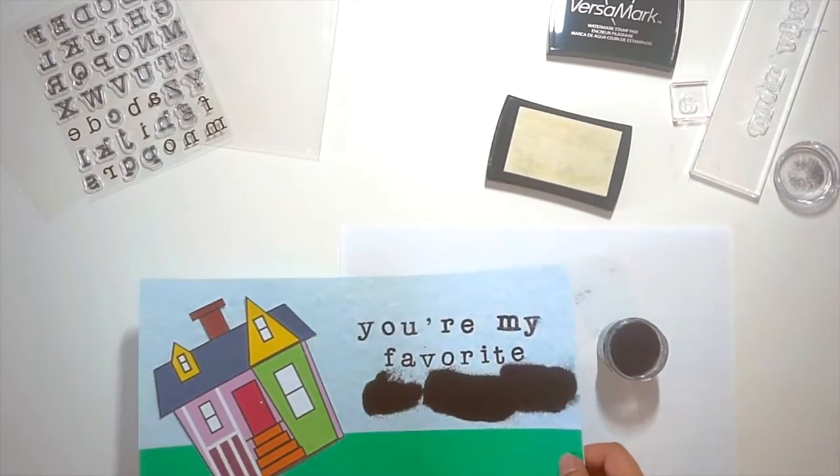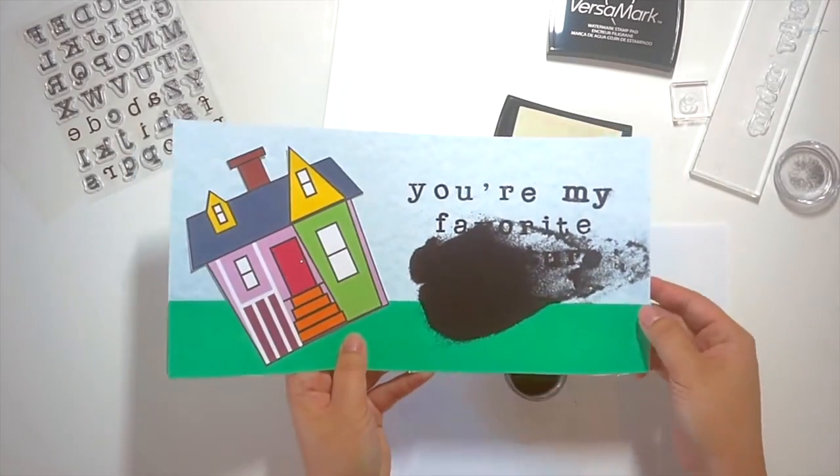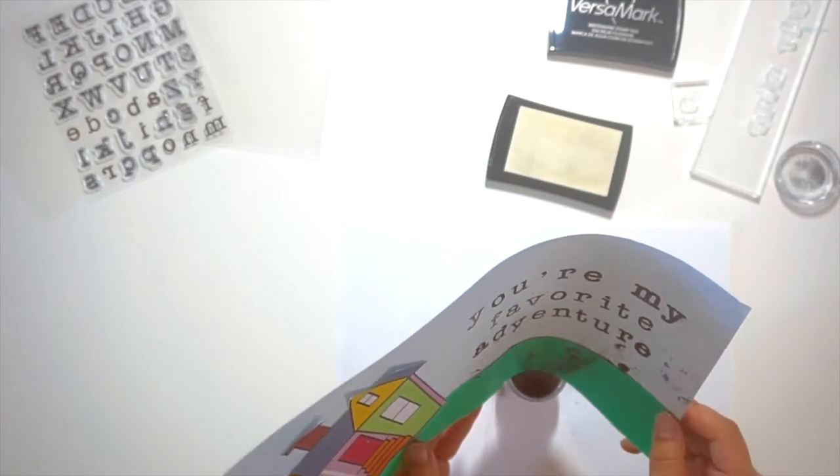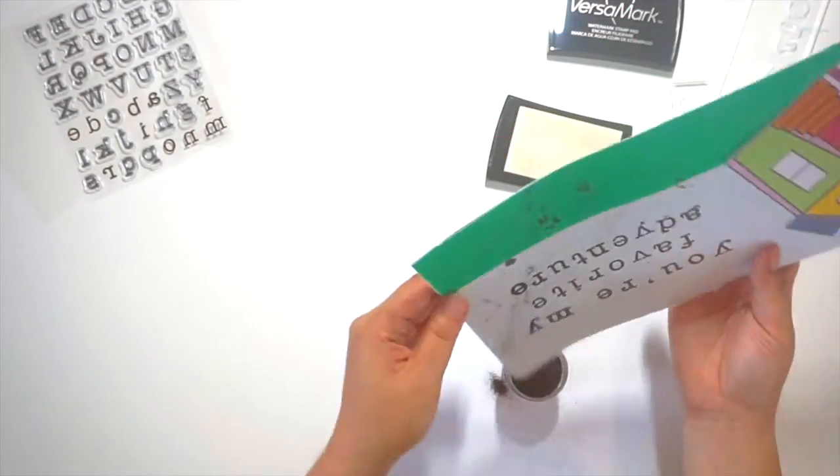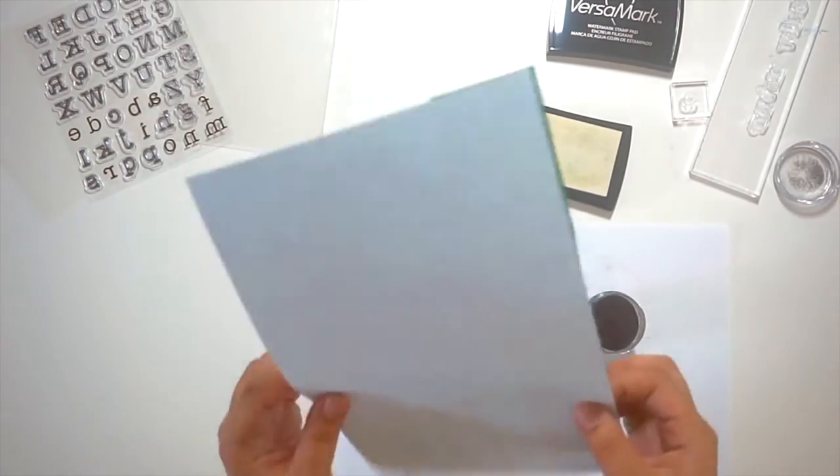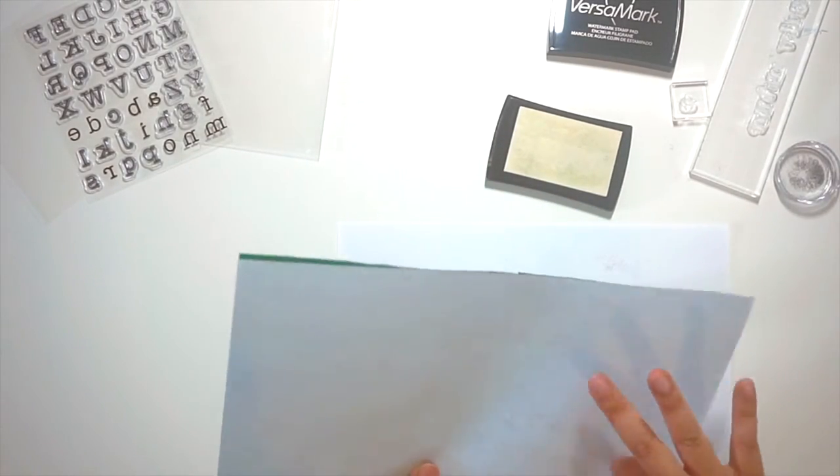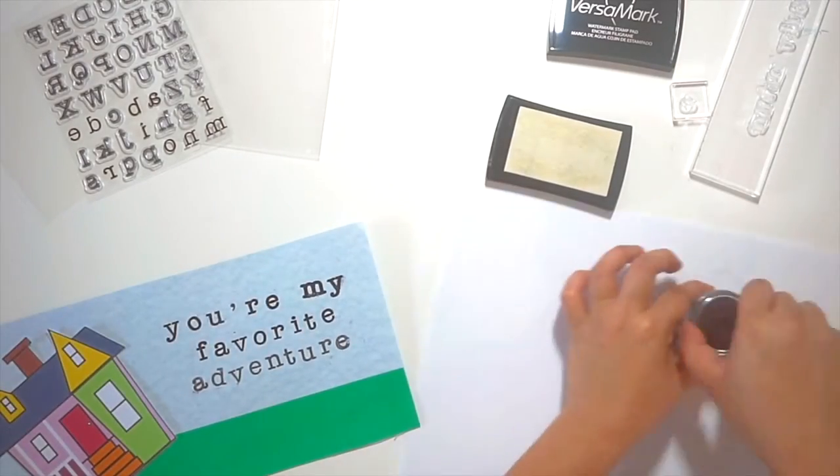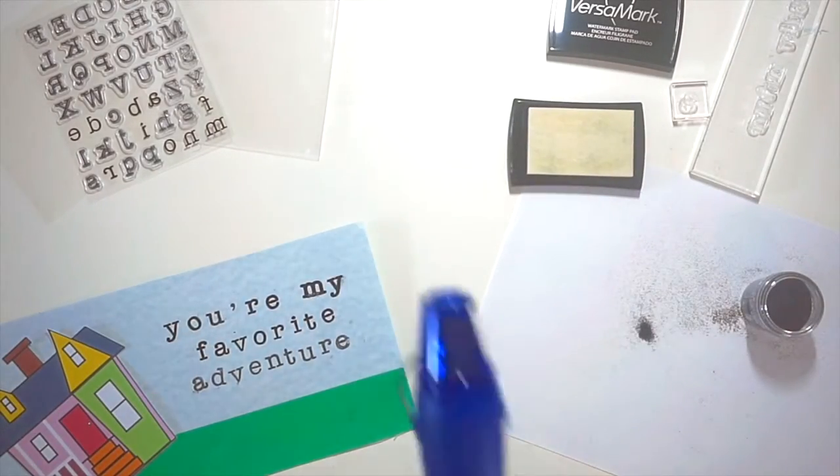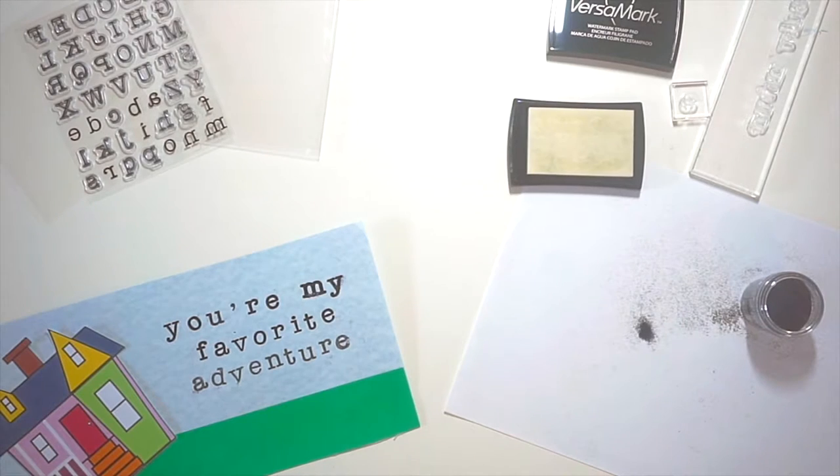I then use my Ranger embossing powder and pour that over what I just inked. I should have used my powder tool on this before, but what are you gonna do? I just forgot. That explains all the extra blemishes that you see on there, but it's okay—those can be wiped off with a brush or flicked off.